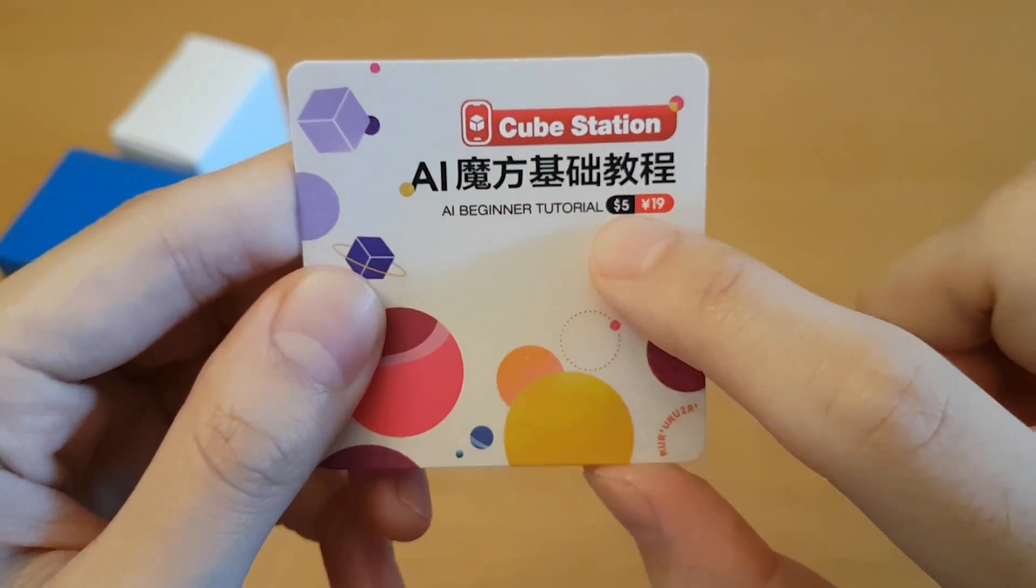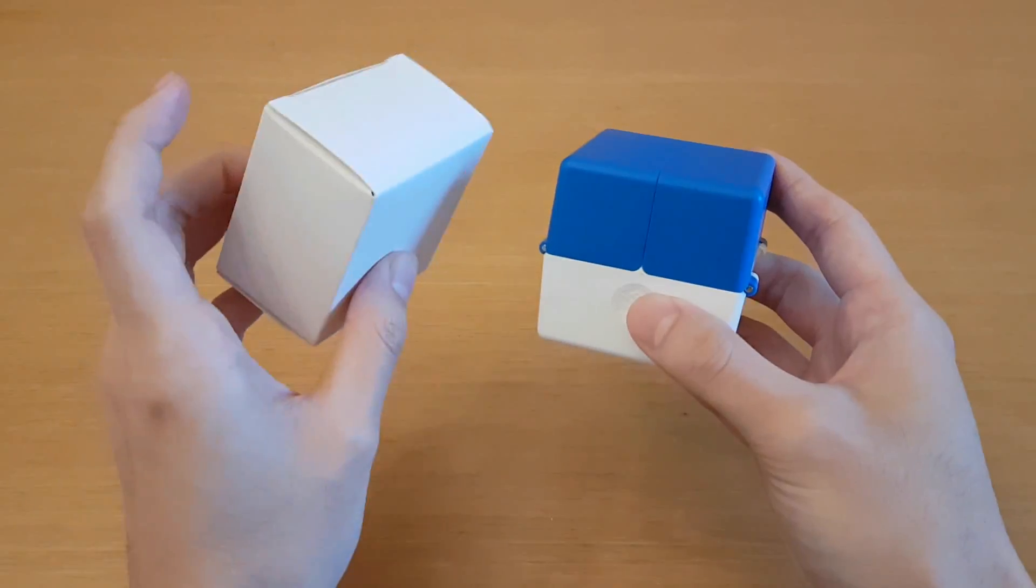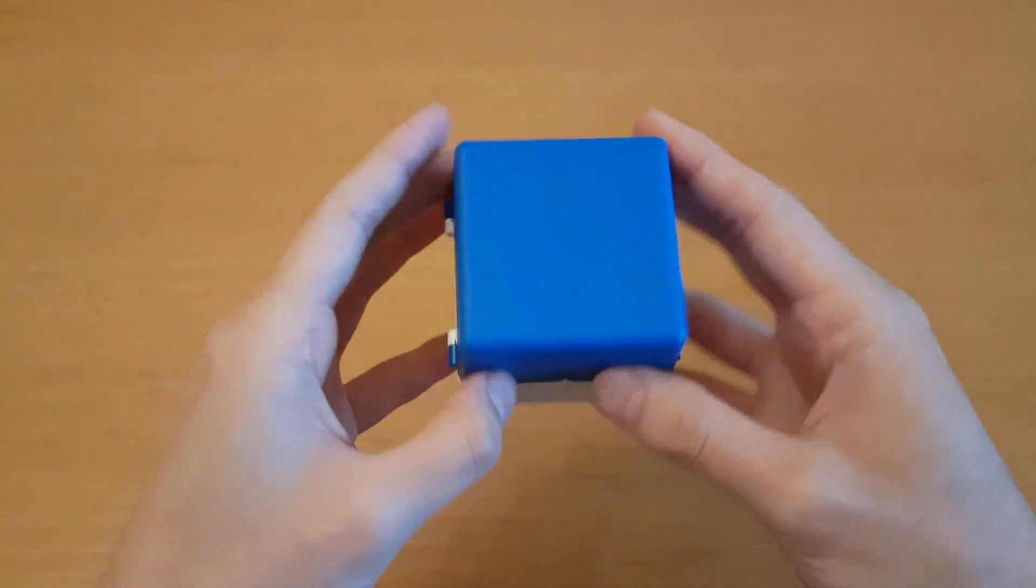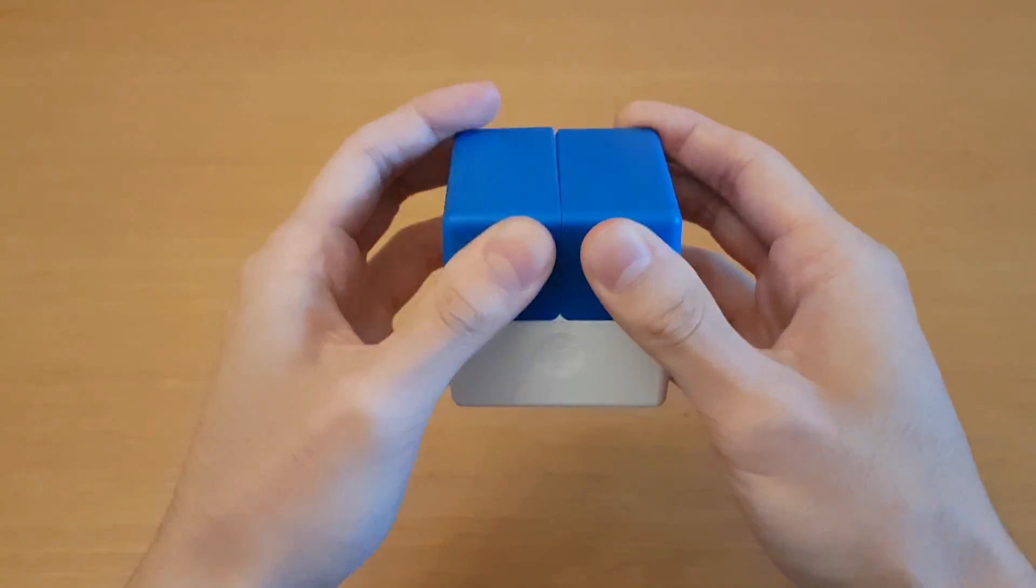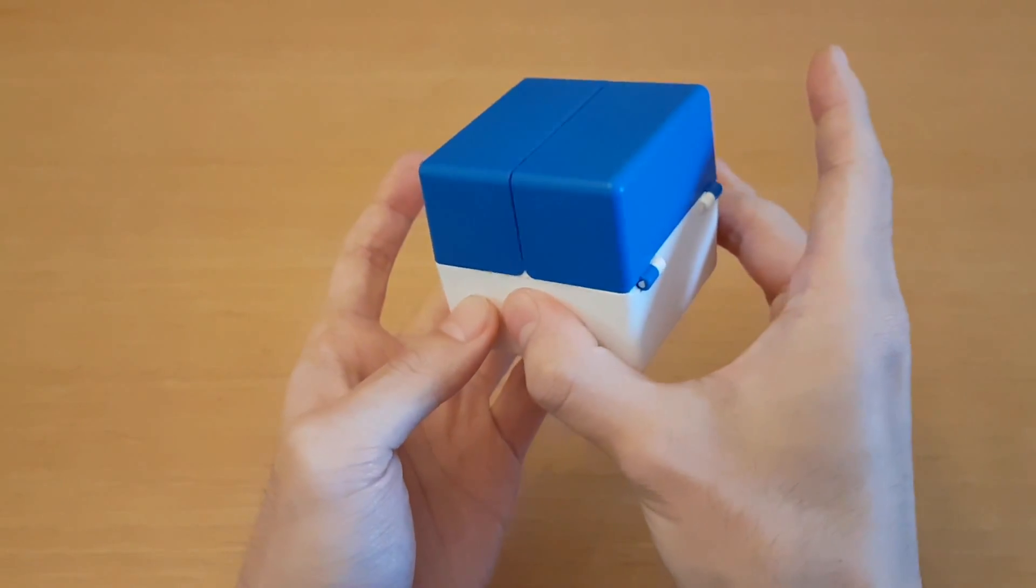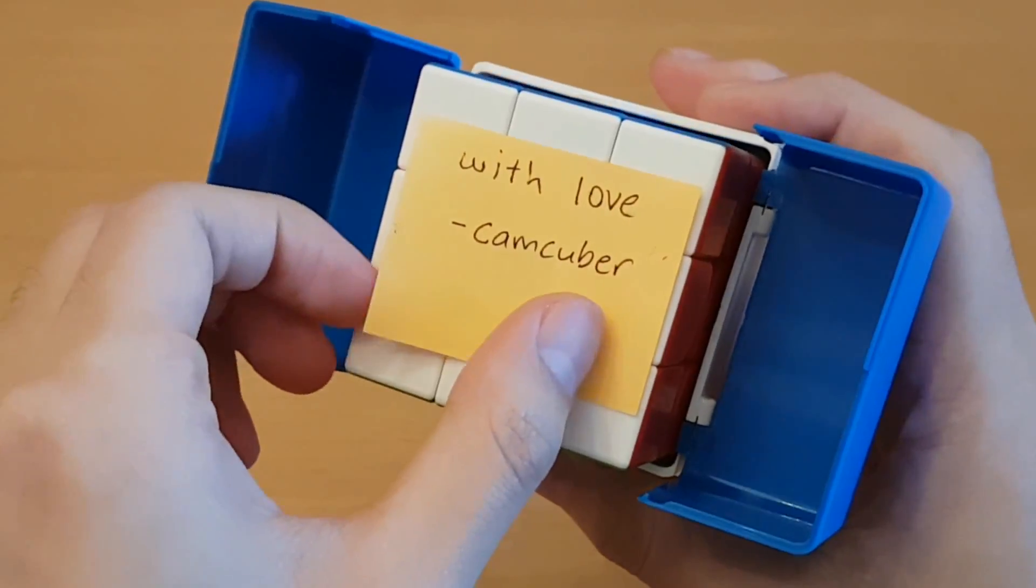$5 for a beginner tutorial, or you can learn for free. This is the accessory box, we'll look at this later, and this is the cube box. Oh wait, GAN logos. Ah, there we go. Thank you Cameron.